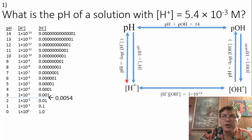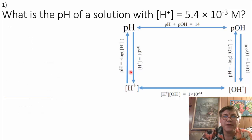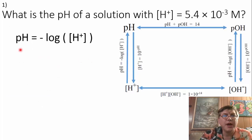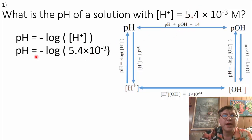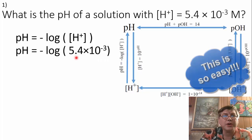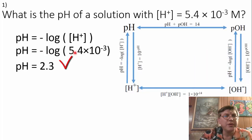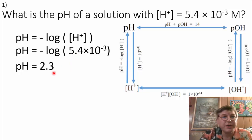We can follow the arrow from the hydrogen ion concentration up to the pH using the equation: pH equals the negative log of the hydrogen ion concentration. Substituting our given: pH equals the negative log of 5.4 times 10 to the negative 3. I just use the log on my calculator and flip the sign after. Plugging in 5.4 times 10 to the negative 3, I get 2.2678. That's way too many significant figures to show for a pH.